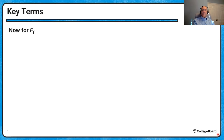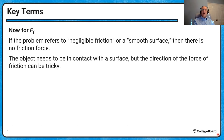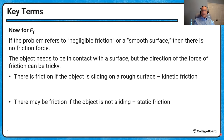How does friction work? Sometimes problems say there's negligible friction or a smooth surface, so we assume no frictional force. An object needs to be in contact with the surface. If an object is sliding on a rough surface, there's kinetic friction. If an object is not sliding on the surface, there may still be friction — we call that static friction.